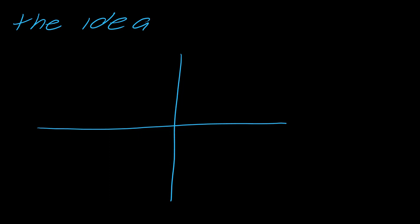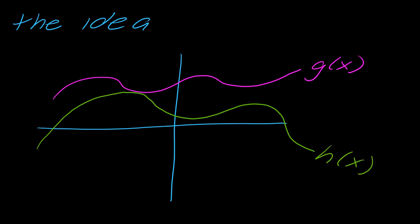So the idea behind the squeeze theorem or the sandwich theorem is pretty simple. You have these two functions, so I'll call this function g of x and then let me make this other function. So I'll make this one h of x, and then let's say that you have this other function kind of just running right through it. So we'll call this one f of x.